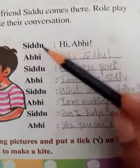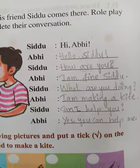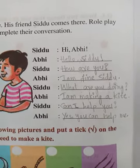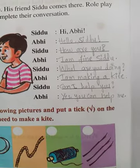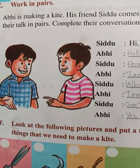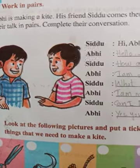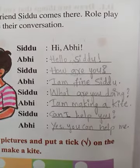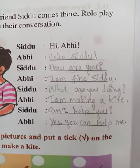Let's review the conversation once again: Sidhu says 'Hi Abhi.' Abhi answers 'Hello Sidhu.' Sidhu asks 'How are you?' Abhi says 'I am fine, Sidhu.' Sidhu asks 'What are you doing?' Abhi replies 'I am making a kite.' Sidhu asks 'Can I help you?' Abhi says 'Yes, you can help me.' In this way both friends spoke to each other. Now pause and write it neatly.